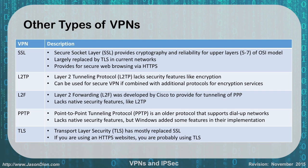PPTP is Point-to-Point Tunneling Protocol — another older protocol that supported dial-up networks. It lacks native security features, but Windows would actually add those features in their implementation to provide security features like encryption. Finally, TLS has pretty much replaced SSL at this point. If you're using an HTTPS website you're probably using TLS, and the port number for that is 443 — port 443 for your HTTPS web browsing.